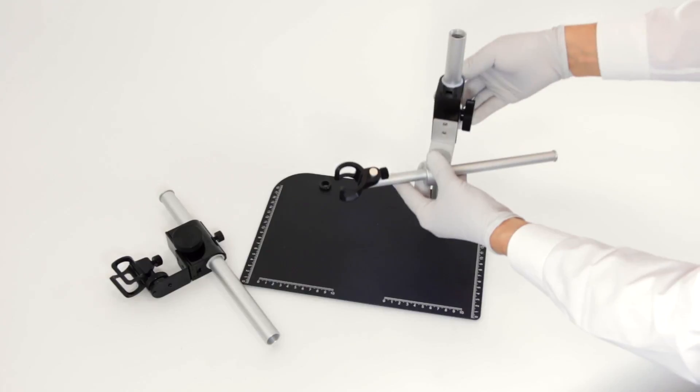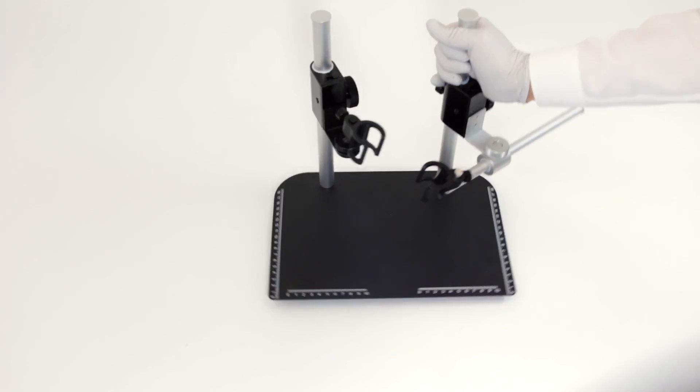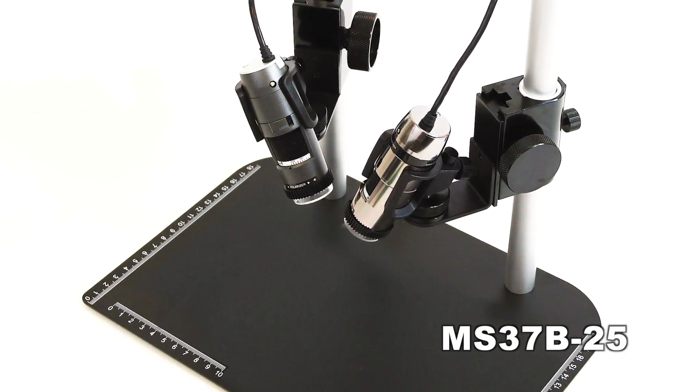This stand comes in three versions that vary in the type of viewing block assemblies that are included. The MS37B25 includes two standard blocks with fine adjustment.